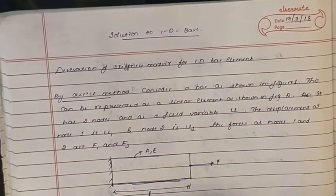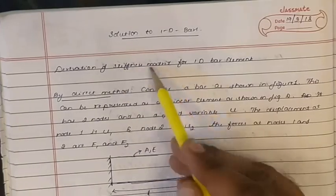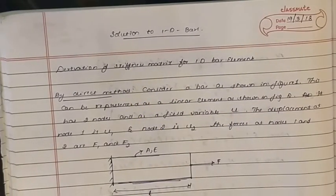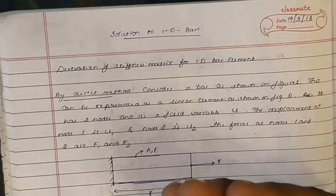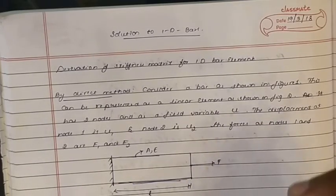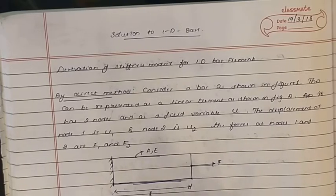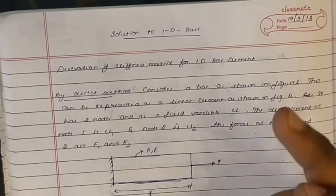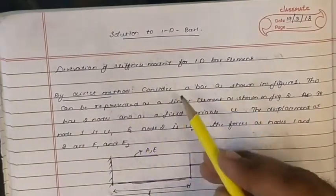We'll now derive the stiffness matrix for a 1D bar element. In the finite element method, to find the solution for any bar element, we first need to know the stiffness matrix of that particular member. There is a stiffness matrix for a bar element, for a truss element, and for a beam element — each is different. We know the finite element equation KQ = F, where K is the stiffness matrix, Q is the displacement, and F is the force.